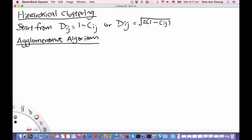And the way to do it would be to start from the distances, dij equals 1-cij, or to use the ultrametric distance, dij equals square root 2 times 1-cij. Now what I'm going to describe is the agglomerative algorithm.